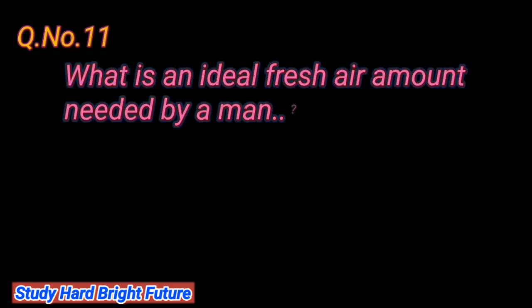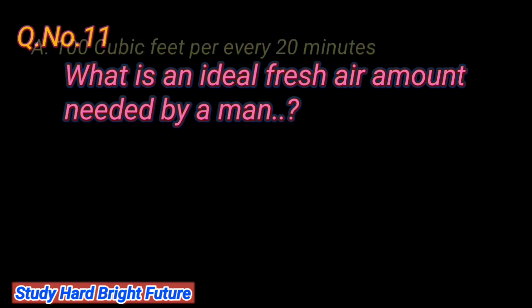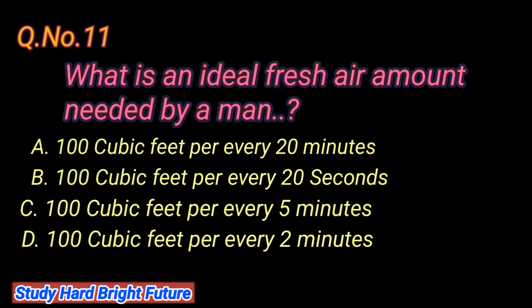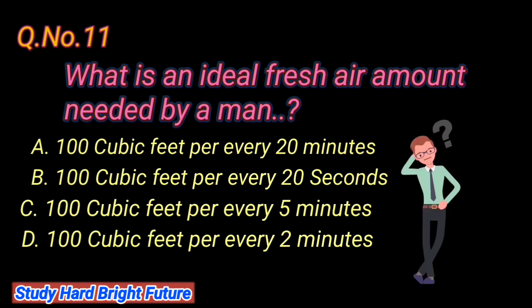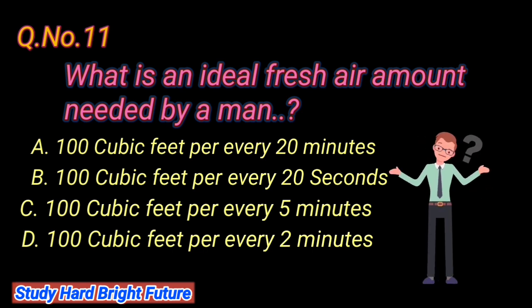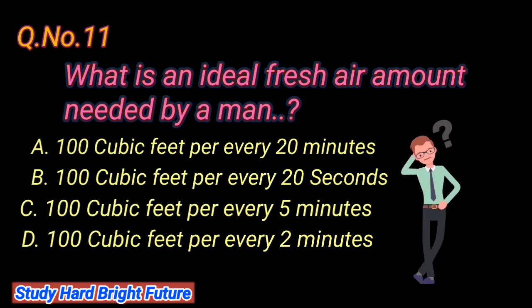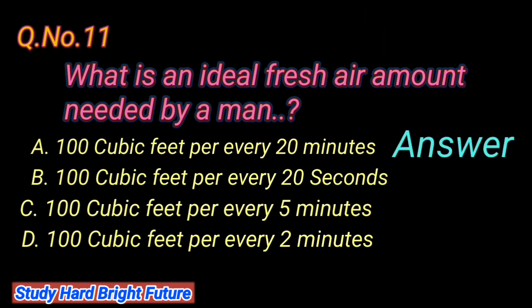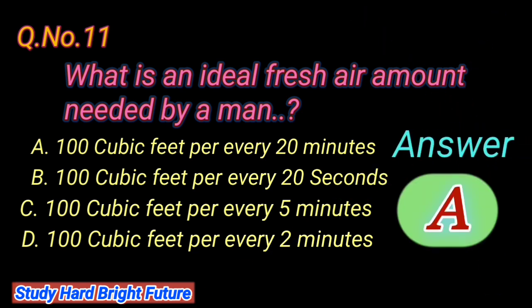Question number 11: What is an ideal fresh air amount needed by a man? A. 100 cubic feet per every 20 minutes, B. 100 cubic feet per every 20 seconds, C. 100 cubic feet per every 5 minutes, D. 100 cubic feet per every 2 minutes. The right answer is A. 100 cubic feet per every 20 minutes.